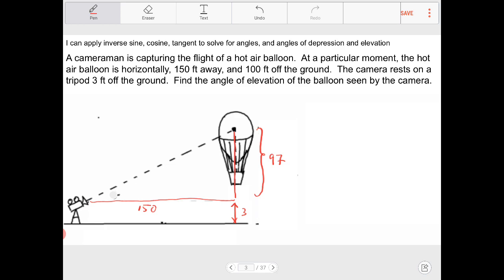And the goal is to find out what is the angle of elevation. Find the angle of elevation. That's this guy right here. So how are we going to do that? Well, looking at this right now, what I have is I have opposite and adjacent. 97 is opposite of the angle of elevation and 150 is adjacent to the angle of elevation.